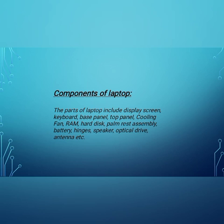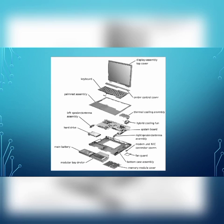The parts of a laptop include display screen, keyboard, base panel, top panel, cooling fan, RAM, hard disk, palm rest assembly, battery, hinges, speaker, optical drive, antenna, and more. These components include the display assembly, top cover, keyboard, central control cover, palm rest assembly, left and right speakers, antenna assembly, hybrid cooling fan, system board, hard drive, modem and NIC connector covers, fan guard, bottom case assembly, and memory module.